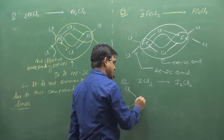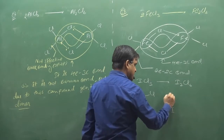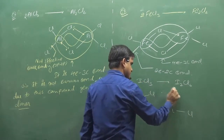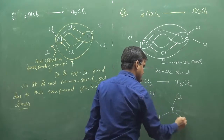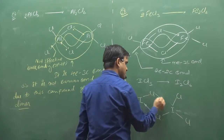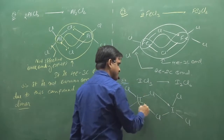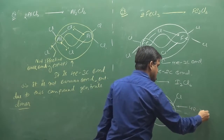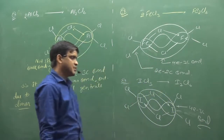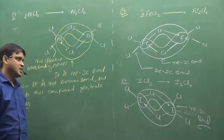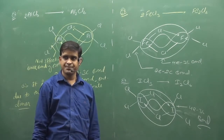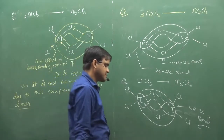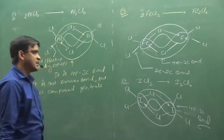How will it be? Iodine, chlorine, chlorine, chlorine - this will be here. What will happen? 4-electron 3-center bond. It will change the shape - yes, this will change the shape.